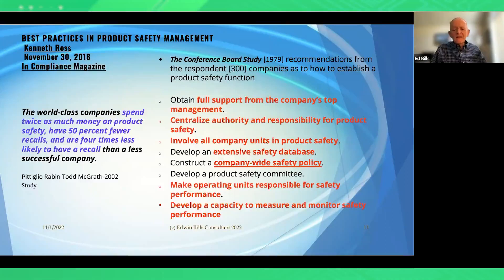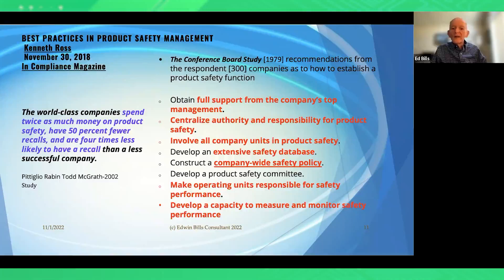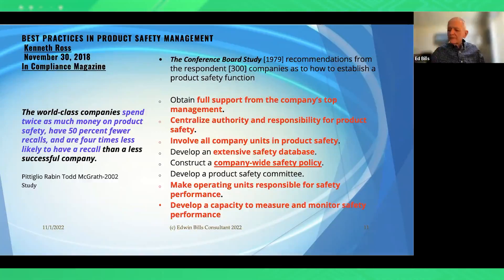All company units must be involved in product safety — manufacturing, design, purchasing, regulatory — a whole range of people. Developing an extensive safety database is also important. For example, one company making AEDs had a standard hazards list as a starting point for all risk analysis. Product safety standards are another great database: any hazard identified in a standard such as IEC 60601 (the electrical safety standard) is an unacceptable risk. Operating units must be responsible for safety performance, and organizations must have the capacity to measure and monitor safety performance, which is a requirement in clause 10 of the standard.